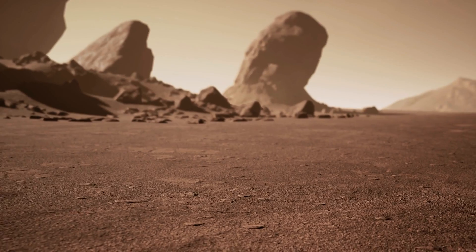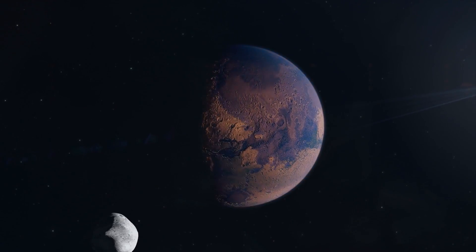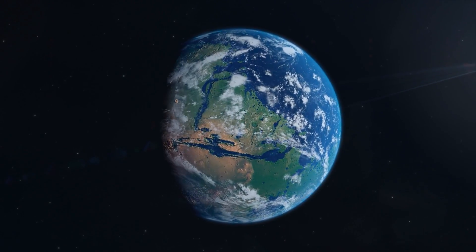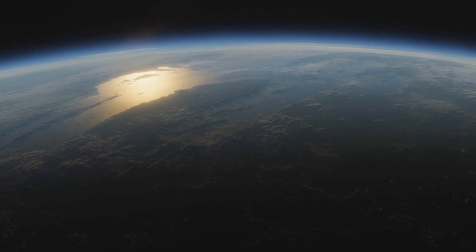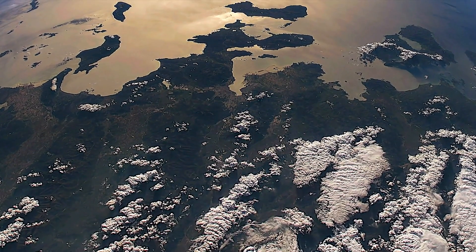Mars was not always a dusty and desolate world. There is ample evidence that the planet was once warm, had lakes of liquid water, and was habitable for a brief period in its history.